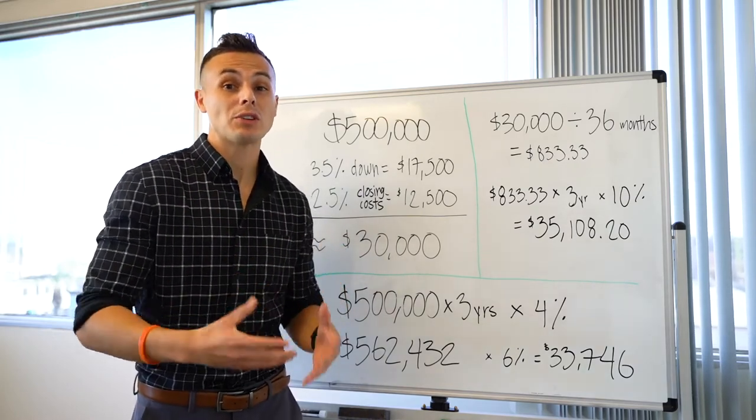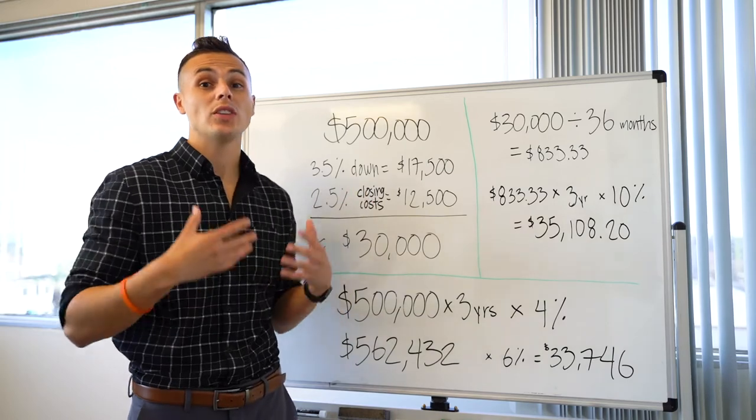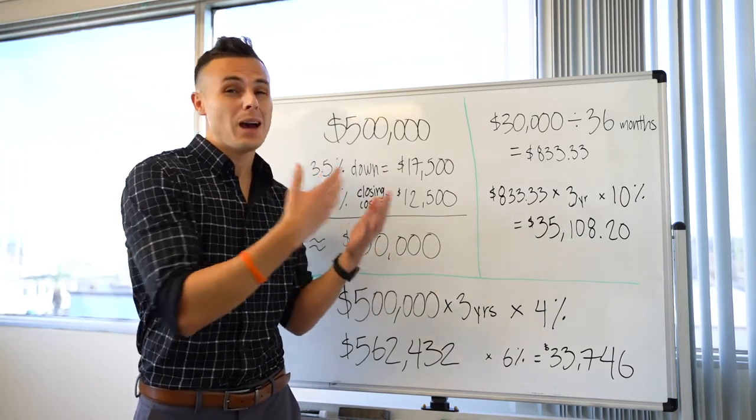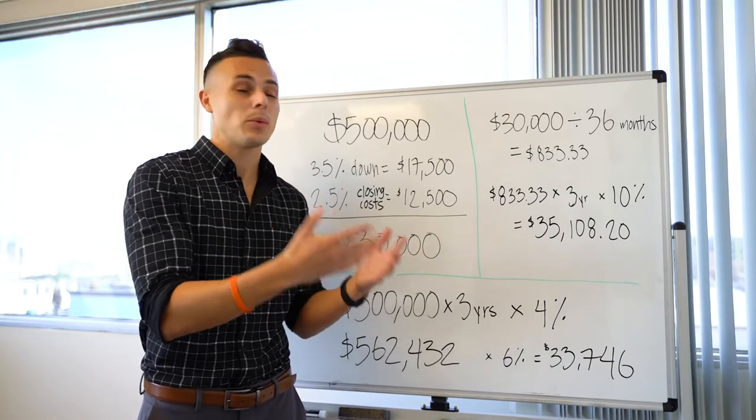I'm going to walk you through a scenario of someone looking to purchase a $500,000 home using the FHA loan, which is highly recommendable. The interest rates are low, down payment required is low, debt to income ratio is easy to stay within.